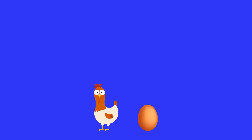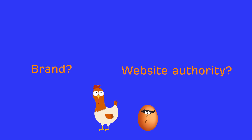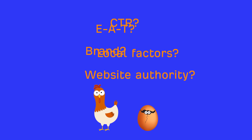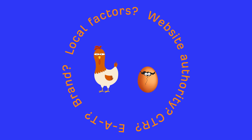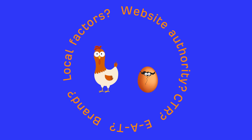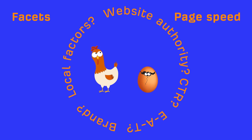So we're left with this chicken-or-the-egg scenario. Are these sites ranking because of brand? Or because of website authority as measured by domain rating? Or could it be expertise, authoritativeness, and trustworthiness — aka EAT? What about CTR or local factors? Maybe it's a combination of many, or some of these things are dependent on each other. We haven't even talked about on-page and technical SEO factors like facets, page speed, and more. This makes KD a tough metric to calculate accurately because manual assessment is a prerequisite — and even then, we're still hypothesizing.